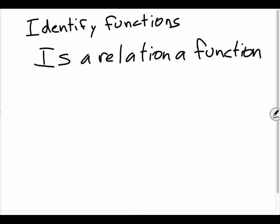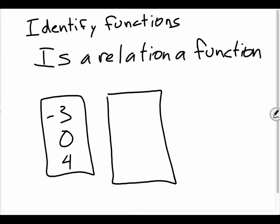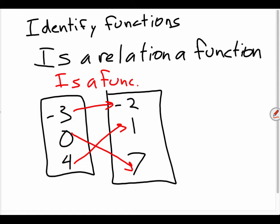One way to identify a function is through mapping. So if I have the values negative 3, 0, and 4, and those values are mapped to negative 2, 1, and 7. Here's the interesting thing: negative 3 is mapped to negative 2, 0 is mapped to 7, and 4 is mapped to 1. This is a function.